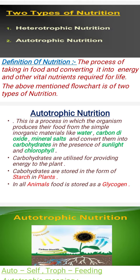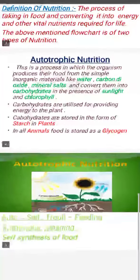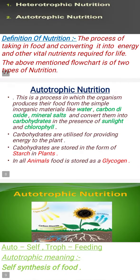Carbohydrates are stored in the form of starch in plants. In all animals, food is stored as glycogen. The word autotrophic is derived from: 'auto' meaning self, and 'troph' meaning feeding — so autotrophic means self-synthesis of food, or self-producing food.